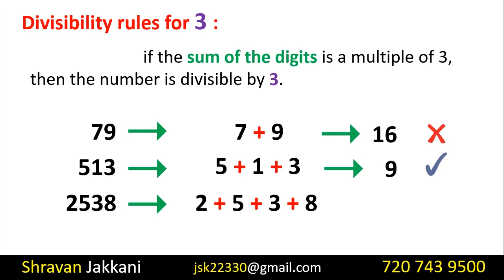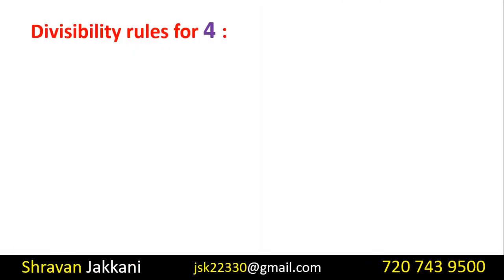Another example: 2538. Add the digits: 2 plus 5 plus 3 plus 8 equals 18. Since 18 is a multiple of 3, we can say that 2538 is completely divisible by 3. So that is the rule of 3. Note that each number has its own specific divisibility rule — the rule of 2 applies differently from the rule of 3.